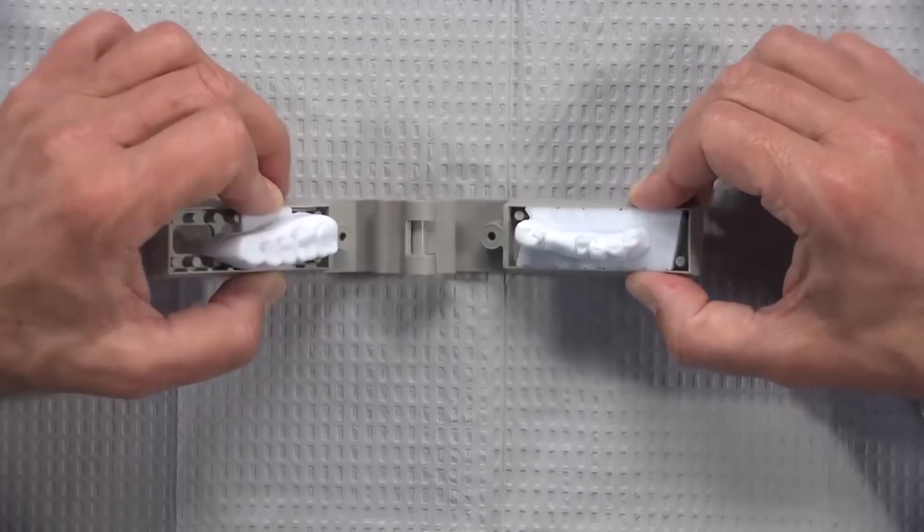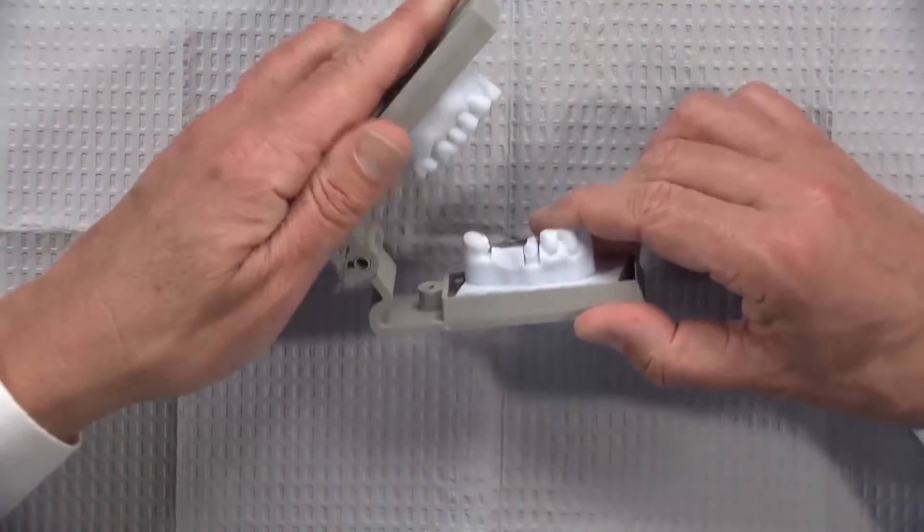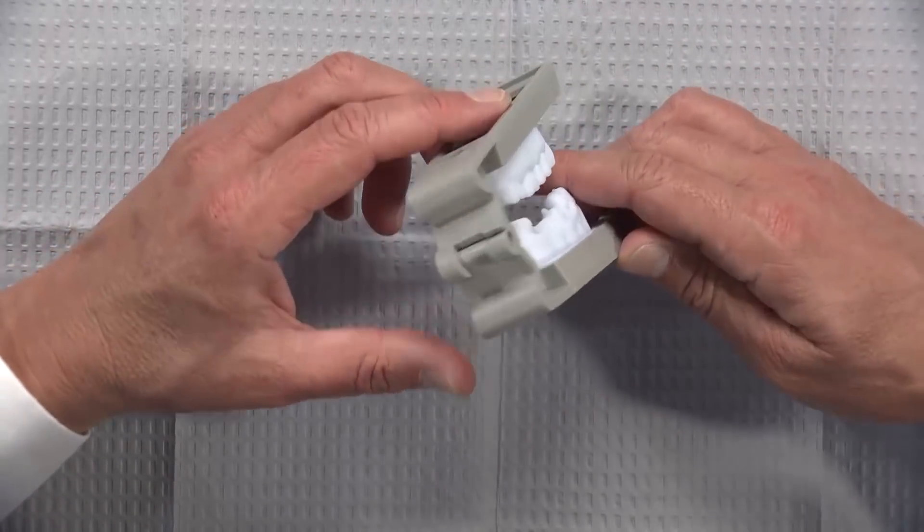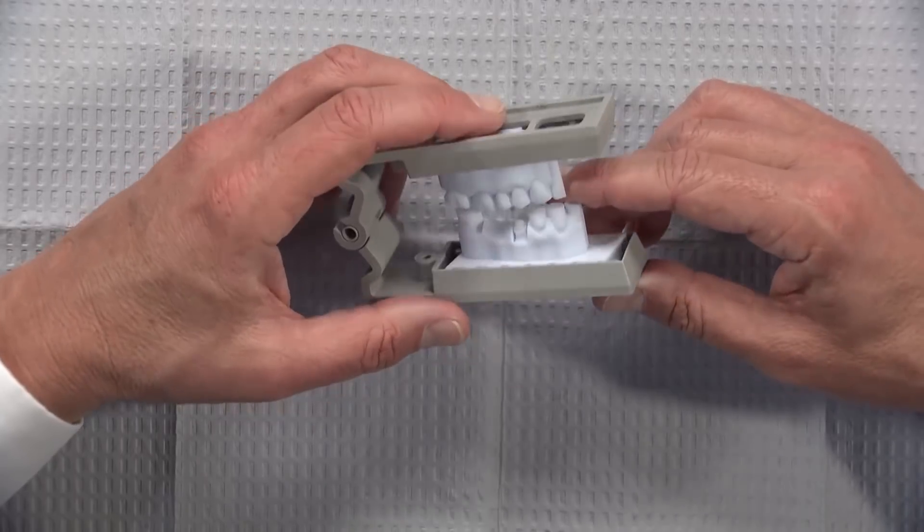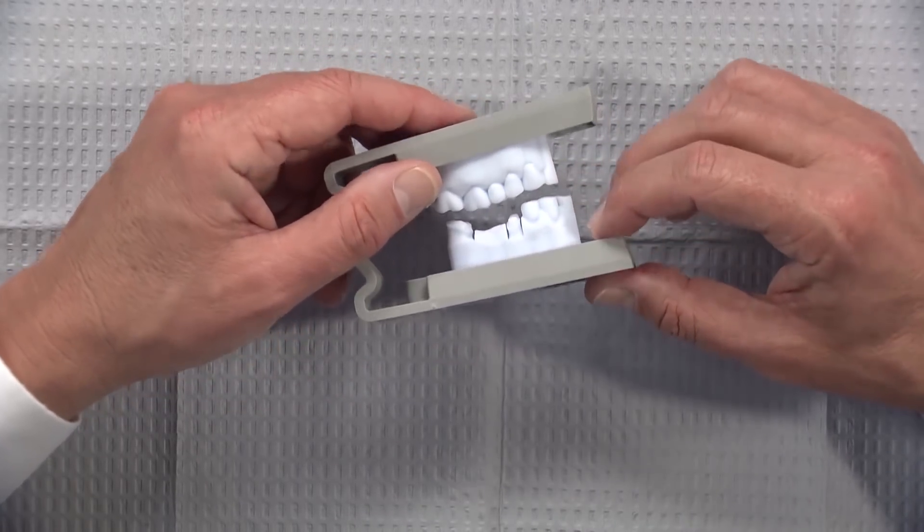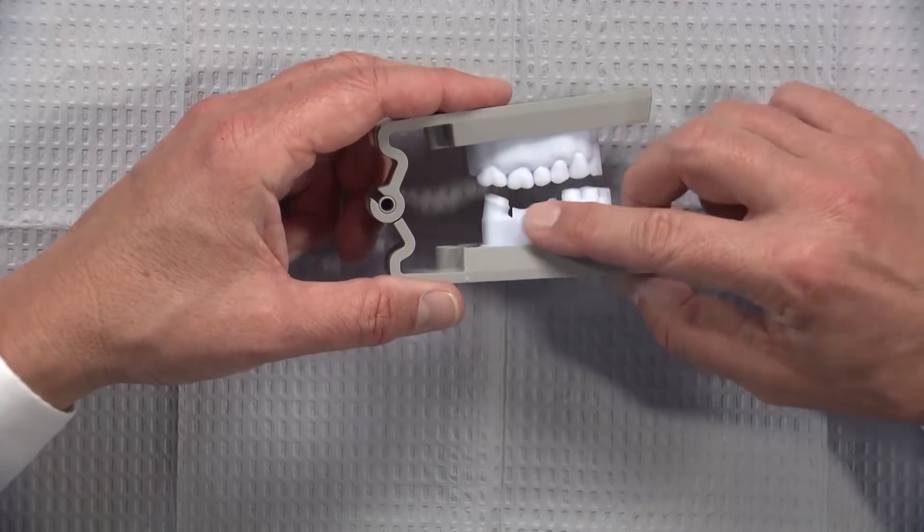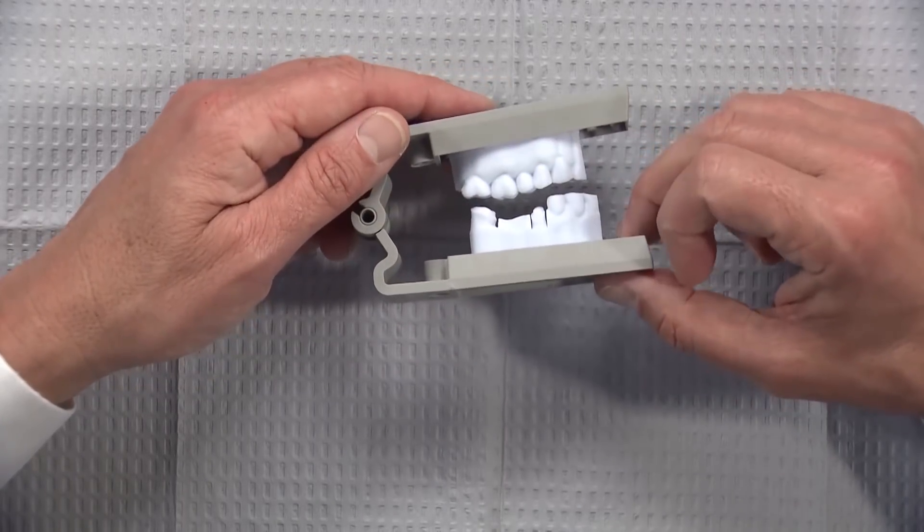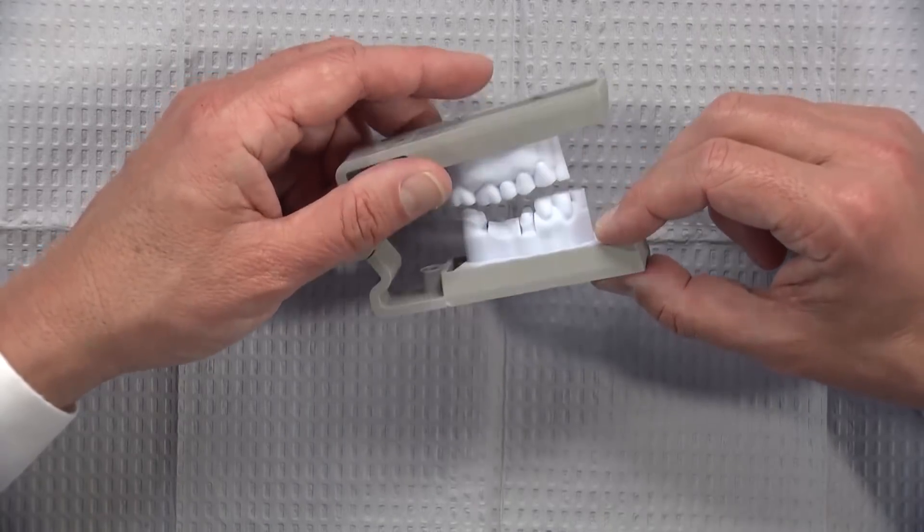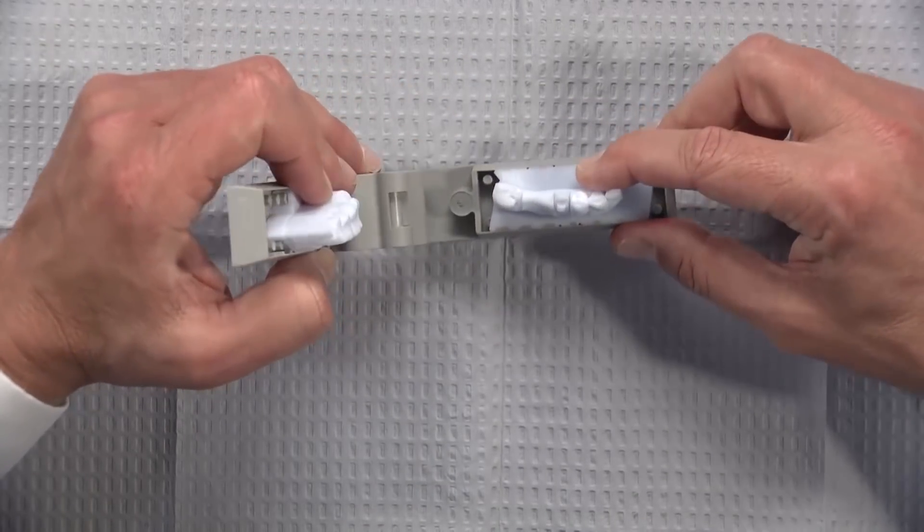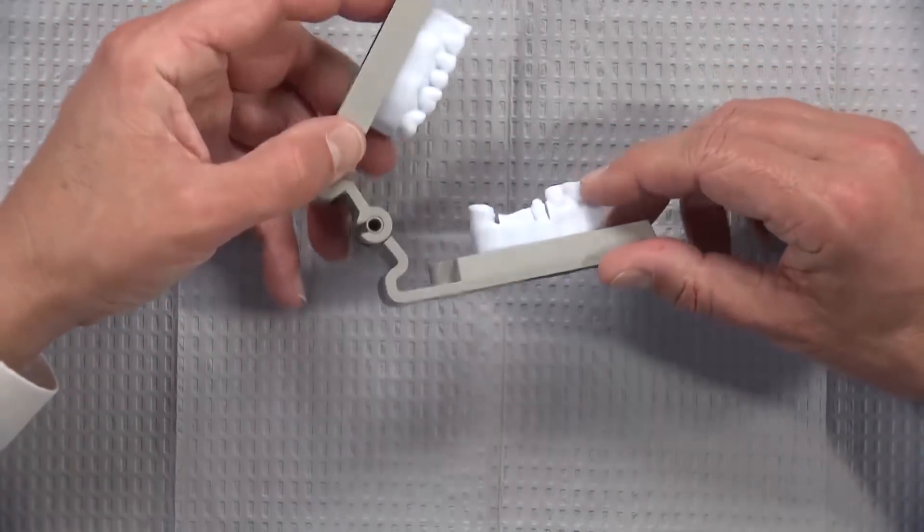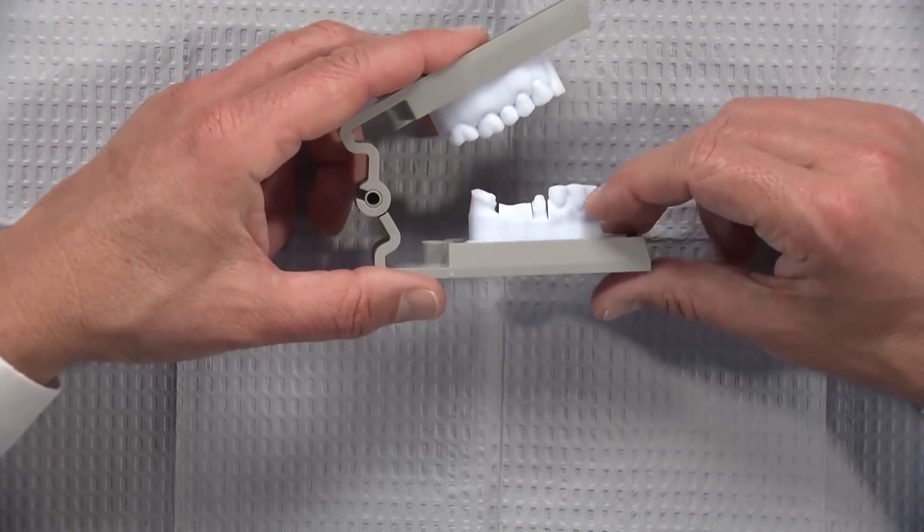This is what a 3D printed model looks like and it comes with their articulator. All in all it works very well. There's a different level of resolution and accuracy done on the prep side versus the opposing side just in terms of speed and efficiency, but we're able to work with these models well.